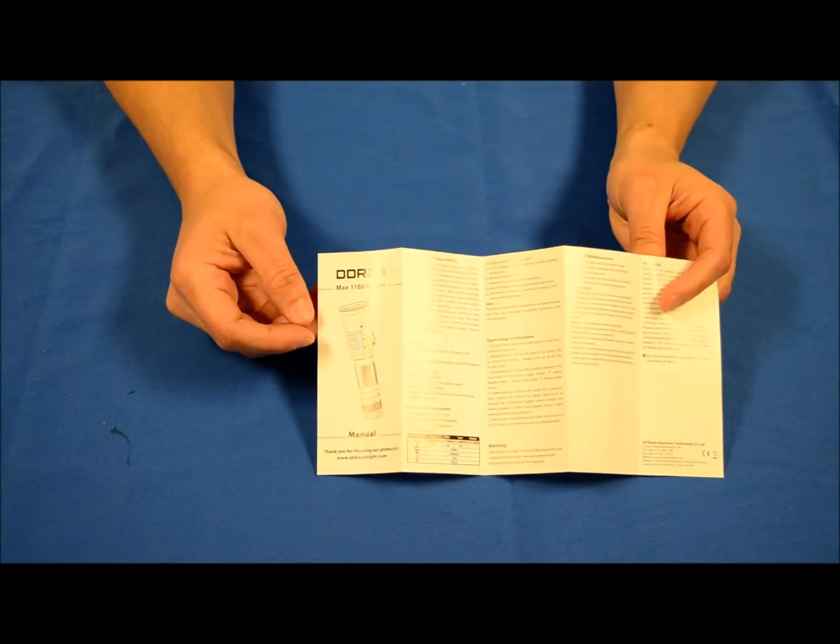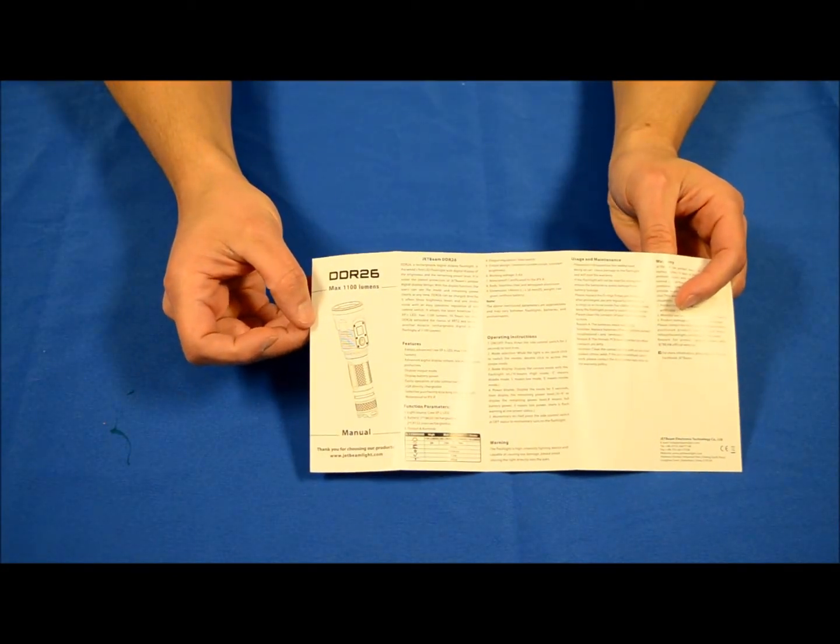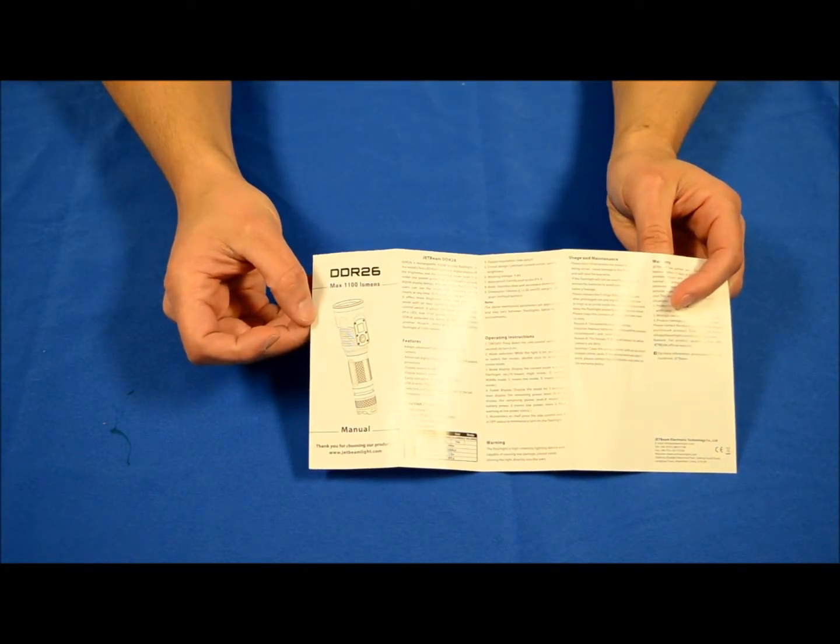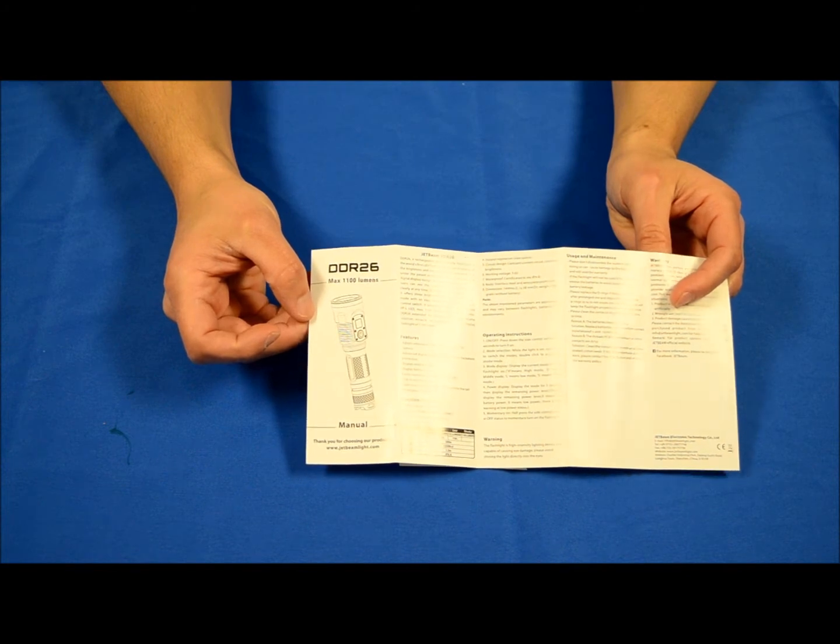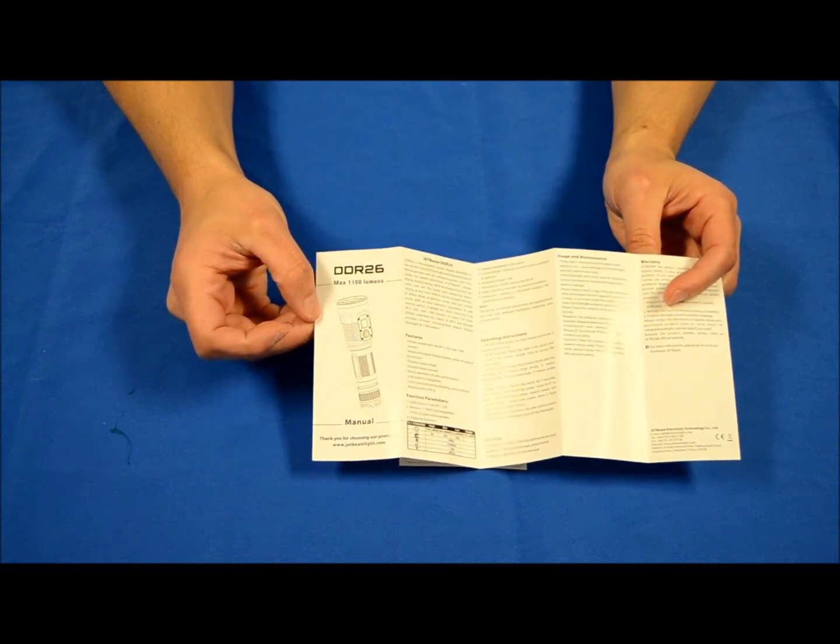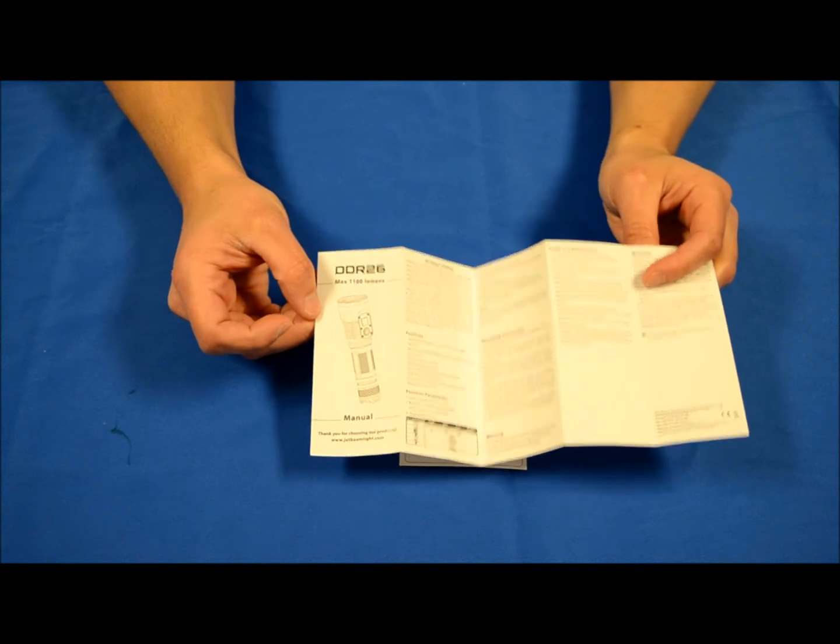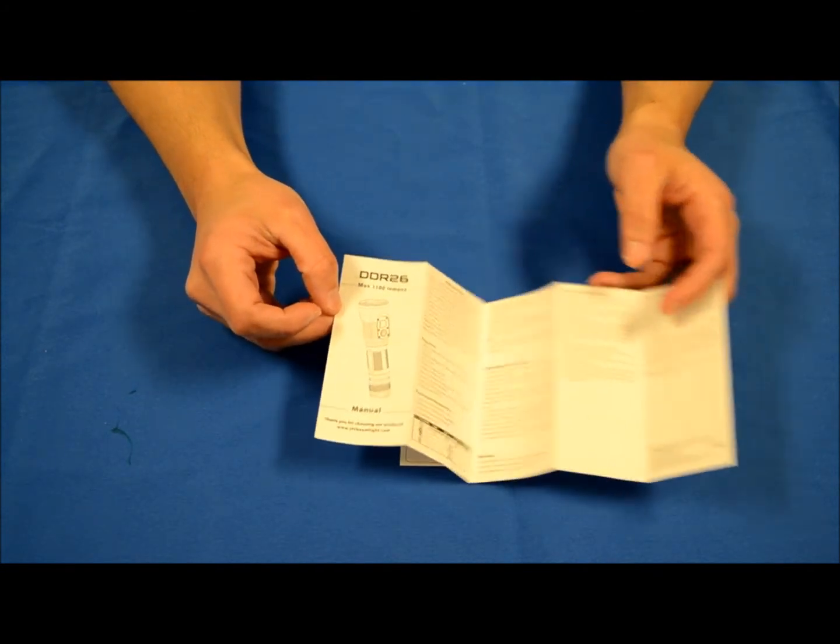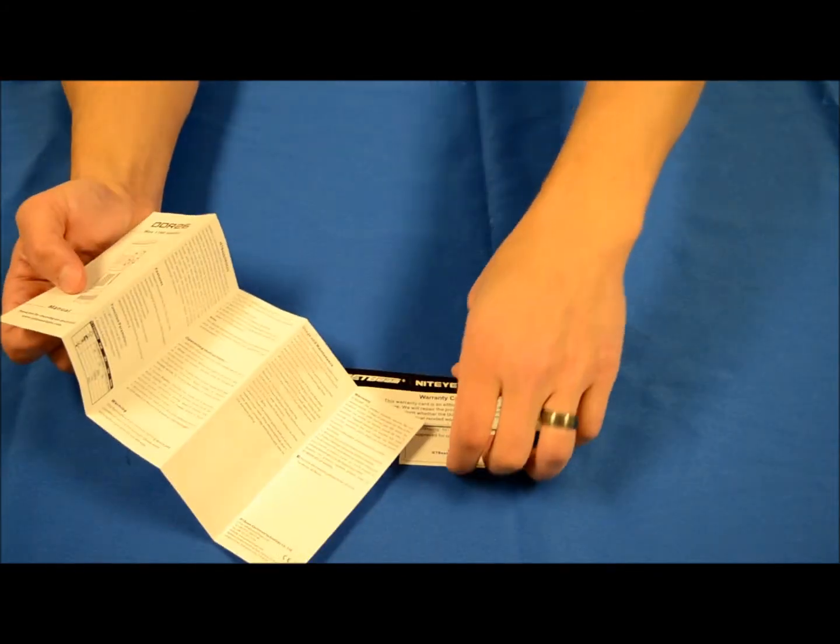The instruction manual which is pretty short because the DDR26 is a three mode, three primary mode plus strobe operation light, not programmable, very easy to operate. So not a whole lot to tell there. And then of course we'll put all this aside and we'll get to the flashlight itself.